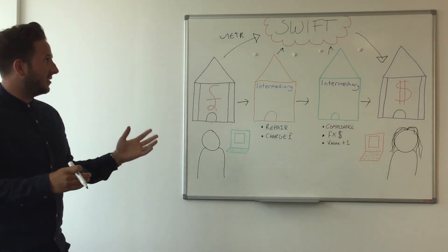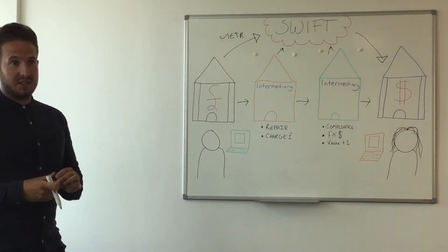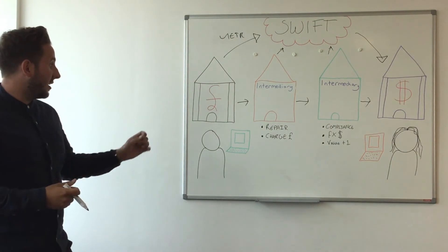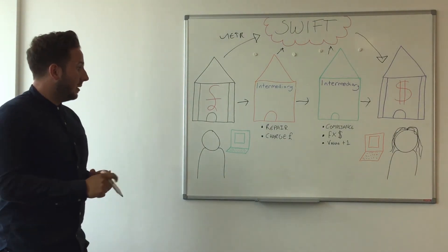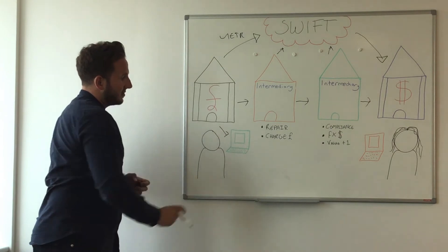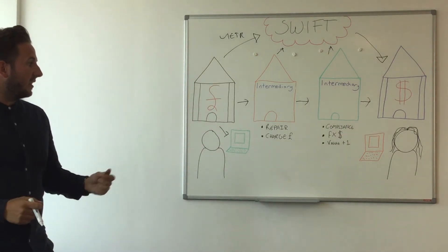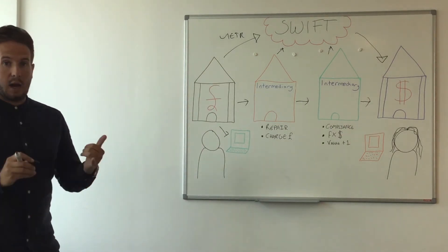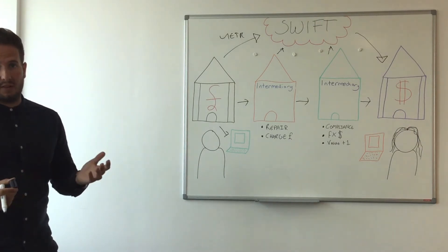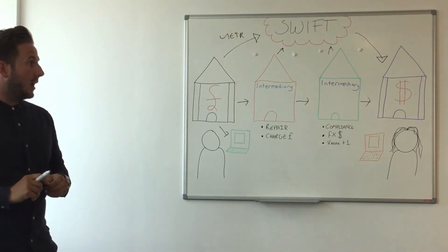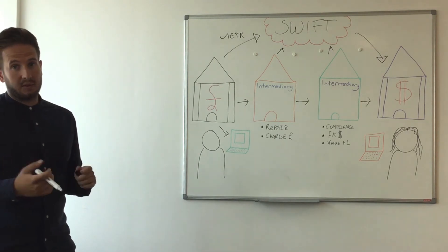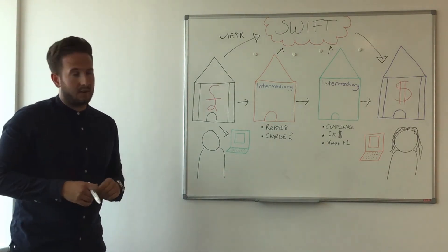You can start to see a use case building for the corporate customer, which is the ability to track a payment. If I remit a payment, I want to see where it is through my bank's portal. I can receive updates on the status, where it is, how much is going to arrive at my beneficiary's account, and I can share that with my supplier or beneficiary — ultimately giving them more confidence that the payment will arrive on time and how much will arrive in their account.